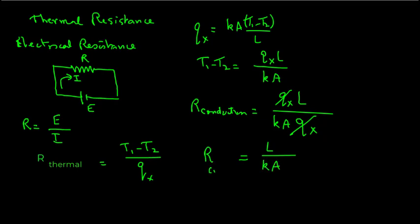So in this case now, QX and QX will cancel out and we will have L over KA. So the thermal resistance under steady state conditions equals L over KA.